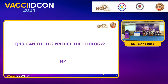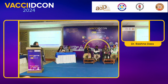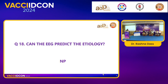EEG can provide etiological clues. Pleomorphic epileptiform changes on EEG suggest HSV encephalitis. More importantly, EEG identifies non-convulsive status epilepticus and the condition FIRES — febrile infection-related epilepsy syndrome. Autoimmune encephalitis also presents with characteristic EEG patterns. EEG should be performed in all children with encephalopathy to assess CNS status and aid in etiological diagnosis.